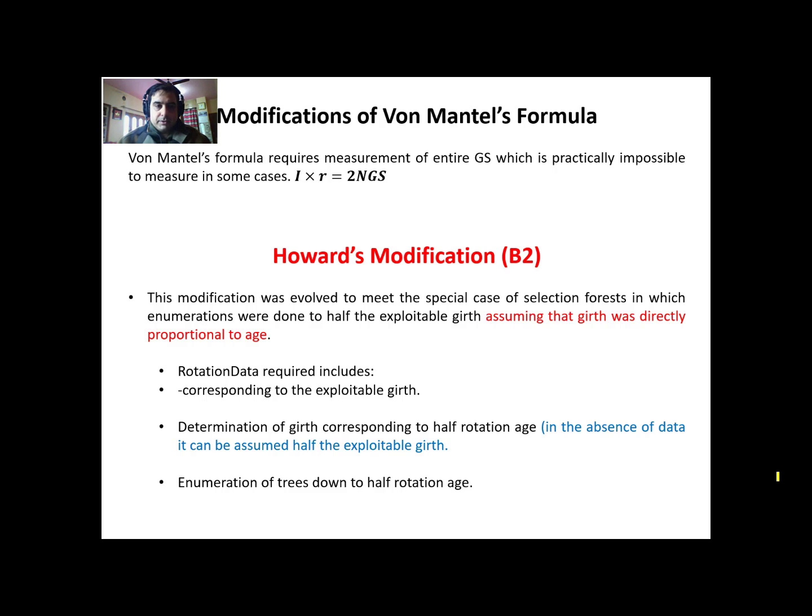Welcome back to modifications of Von Mantel's formula. As you know, Von Mantel's formula is i×r = 2GS, where GS is normal growing stock.